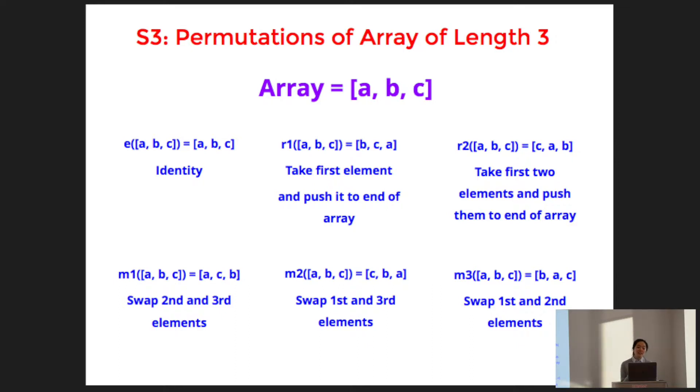So why does S3 satisfy the group axioms? First of all, there is the existence of the identity permutation. And it is closed because if you just take any two permutations and then you combine them, you get another permutation. So hence you have closure. And you also have the inverse property, which is any element in this group has an inverse. The inverse of identity is always identity. And if you look at r1 and r2, these permutations are actually each other's inverse. Because if you push the first element to the end of the array and then you push the two elements to the end of the array, you come full circle. So you get back your original array.